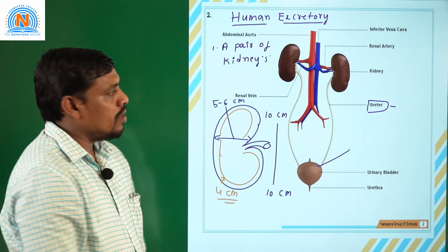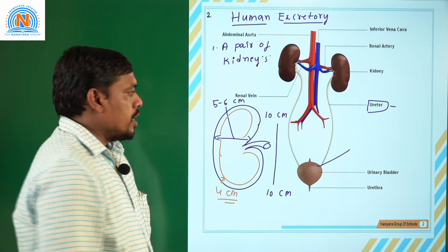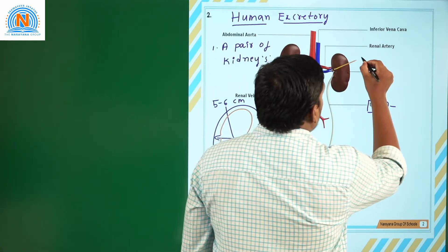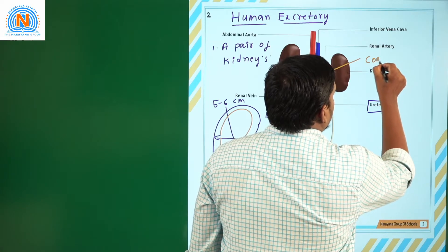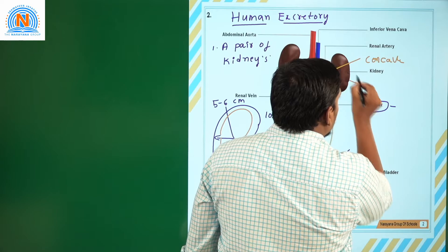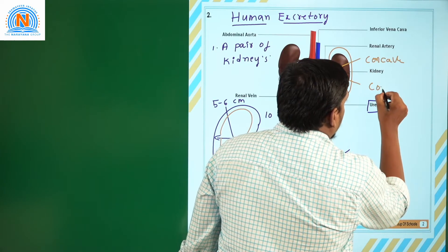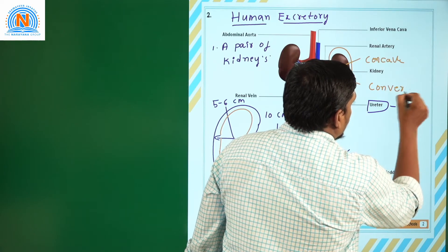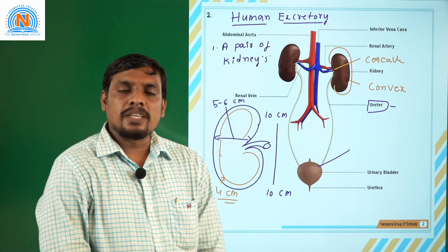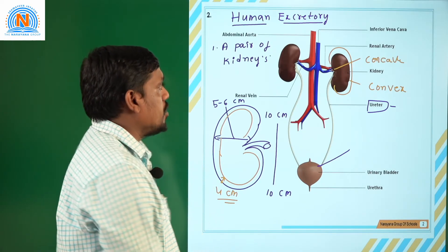This is the external morphology of human kidneys. The inner side of the kidney is concave, whereas the outer side of the kidney is convex — a concept you may have learned in physics.